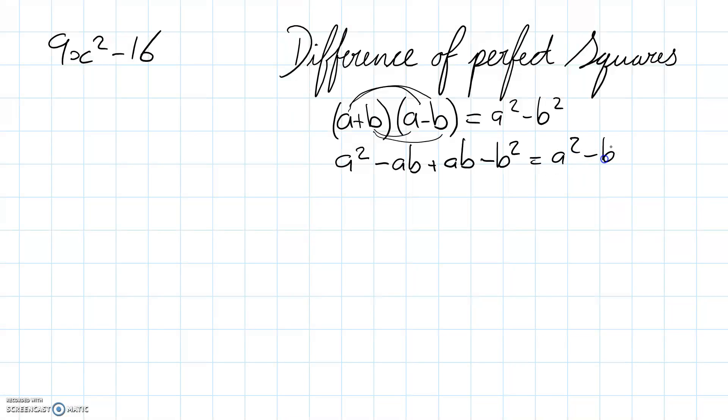a² minus b². Okay, and you can see that these two middle terms cancel out and we're left with a² minus b² equals a² minus b².